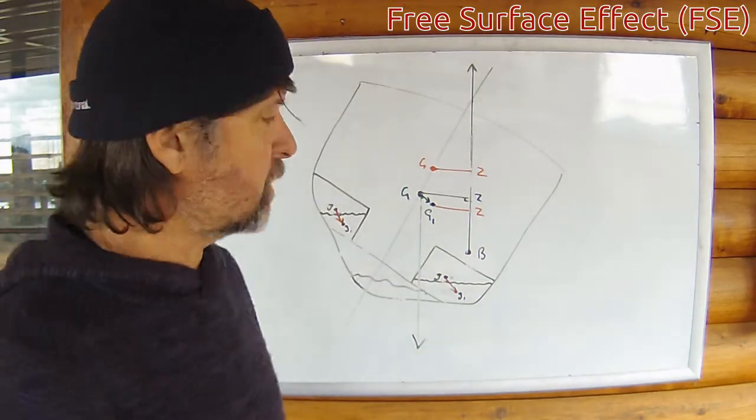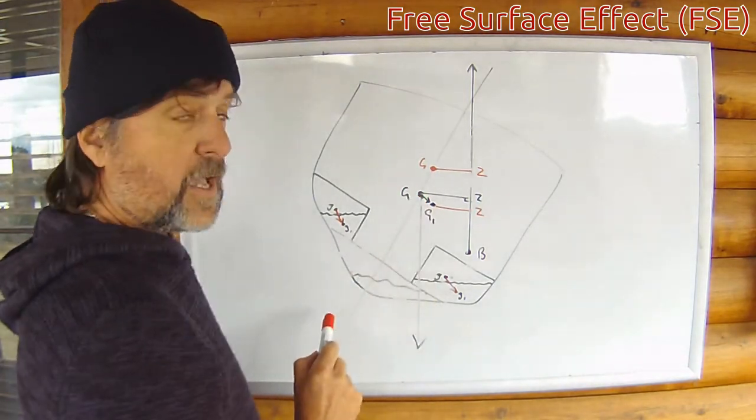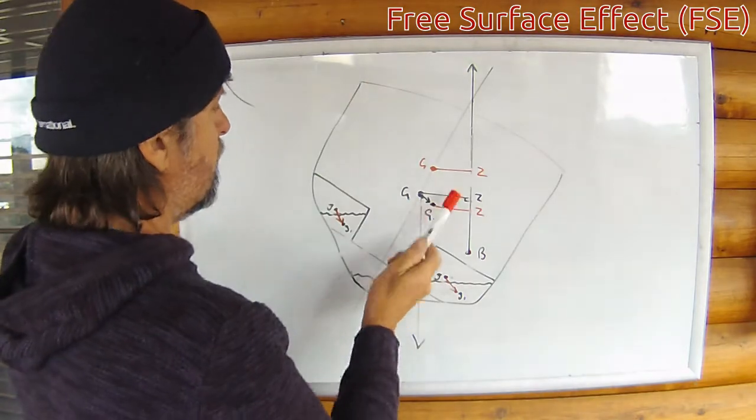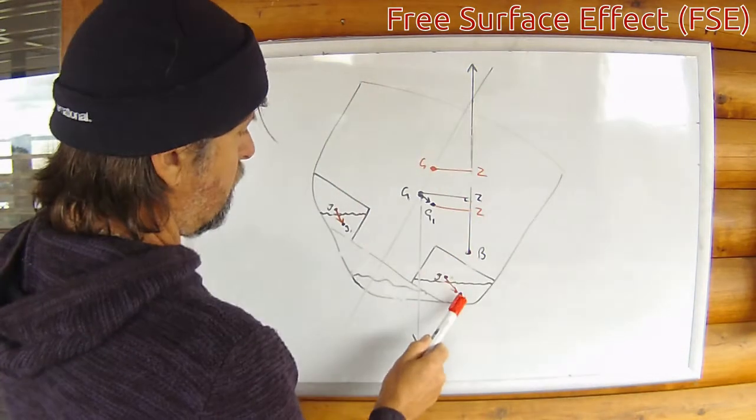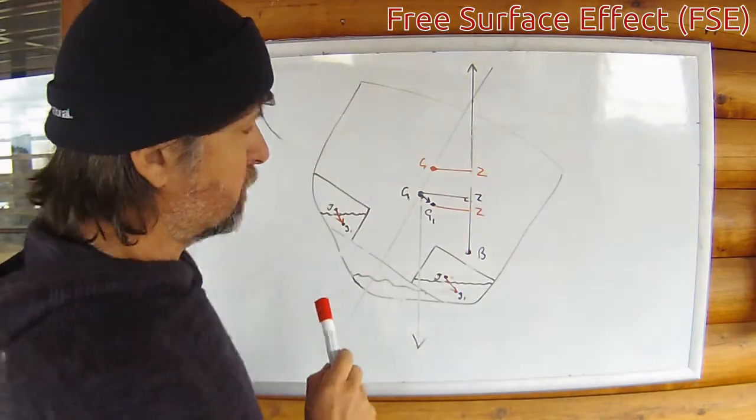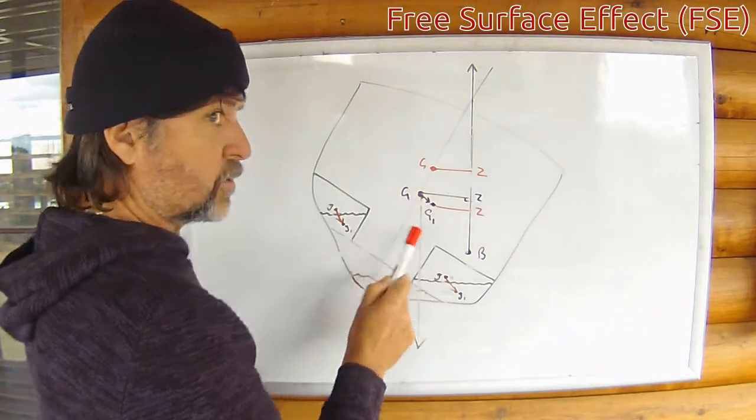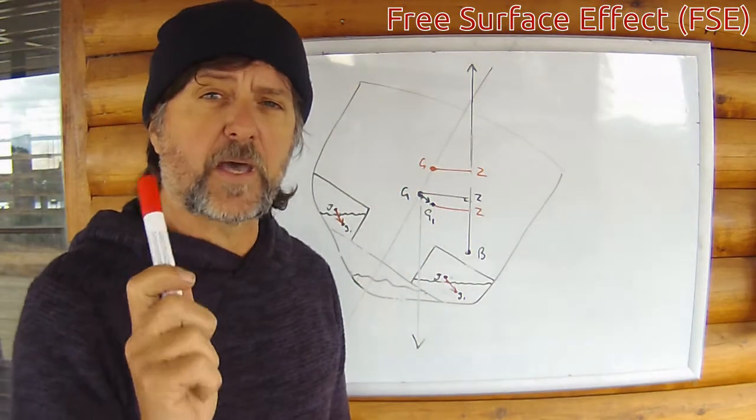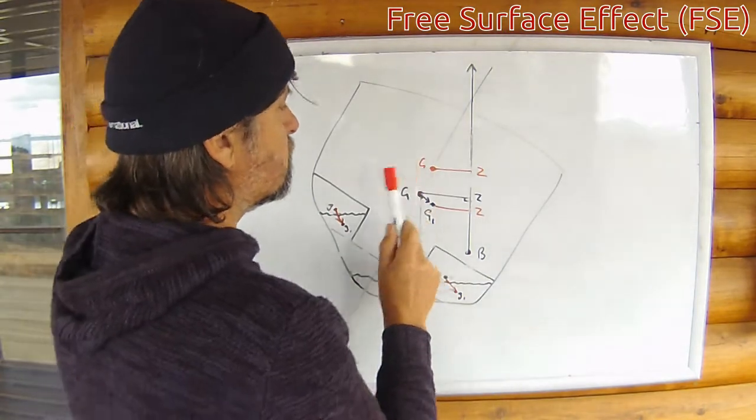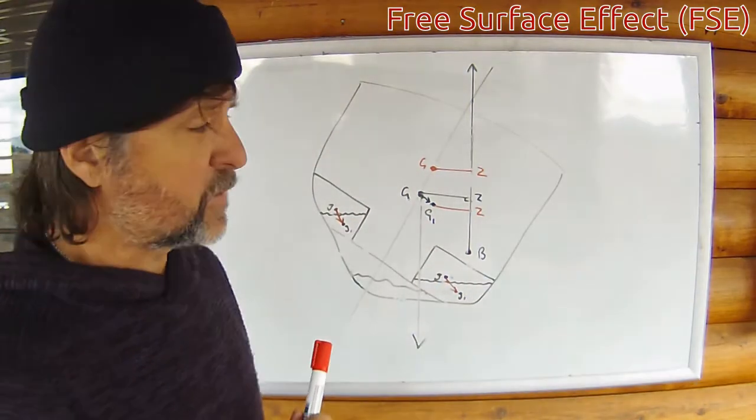Now I've done it in red because it's not really there. G, in fact, has gone down a little bit and off to the side. And as this vessel goes from side to side, the fluid sloshes from side to side, we know that g is going to be busy just sloshing from side to side. But the vessel behaves as though g has risen up the center line.